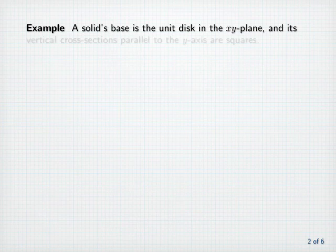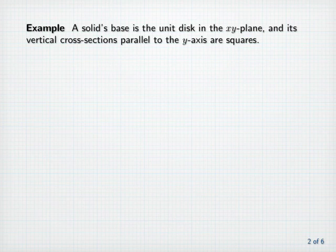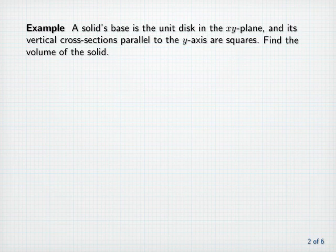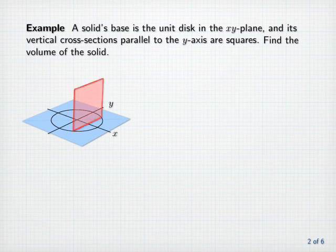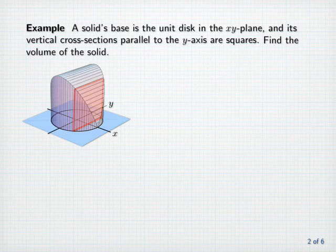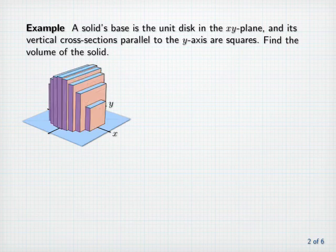Example: A solid's base is the unit disc in the x-y plane and its vertical cross-sections parallel to the y-axis are squares. Find the volume of the solid. To get a picture of the solid, imagine first the x-y plane lying horizontally with the unit circle, which is the base of the solid. Here is the typical vertical cross-section parallel to the y-axis, or perpendicular to the x-axis. And this is what the solid looks like.